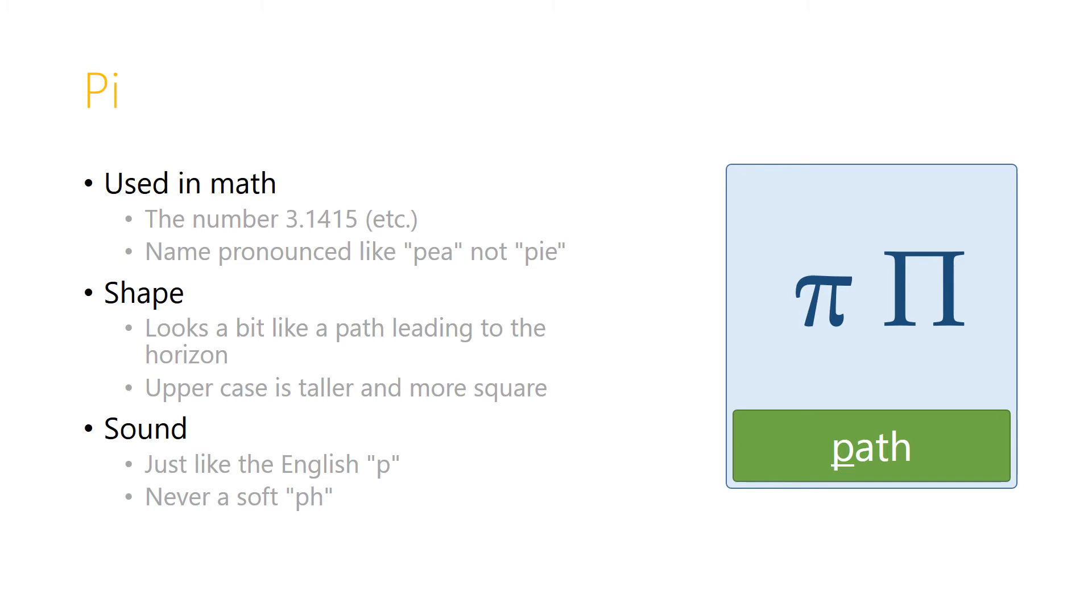The uppercase is taller and more square, but still has the two uprights with a crossbar. The sound again is just like our English P, and it never makes a soft PH. It's always the sound of path.